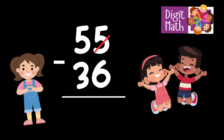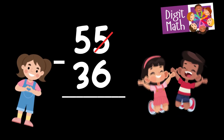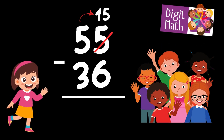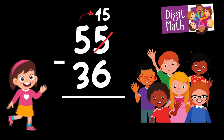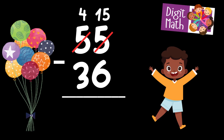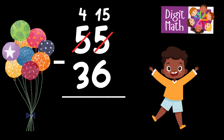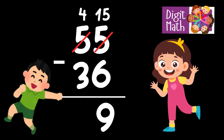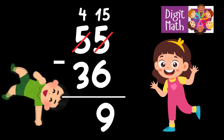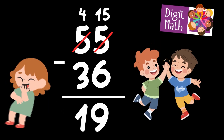In the Units column, we have 5 minus 6. Since it's not possible to subtract 6 from 5, we need to borrow from the Tens column. In the Tens column, we have 5. We take 1 from the Tens, leaving 4 in the Tens column and turning the Units column into 15. Now we have 15 in the Units column. Subtract 6 from 15, which equals 9. In the Tens column, we now have 4. Subtract 3 from 4, which equals 1. So the final result is 55 minus 36 equals 19.